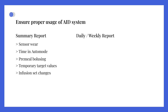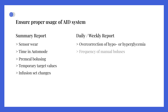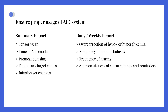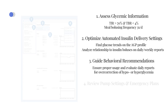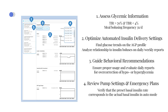Evaluate daily reports for overcorrection of hypo or hyperglycemia. Monitor the frequency of manual boluses and alarms, and assess the appropriateness of alarm settings and reminders. Verify that the preset basal insulin rate corresponds to the actual basal insulin in auto mode. If there is a discrepancy, it is recommended to make adjustments to the basal rate by 10% in each time block rather than making individual adjustments per time block.